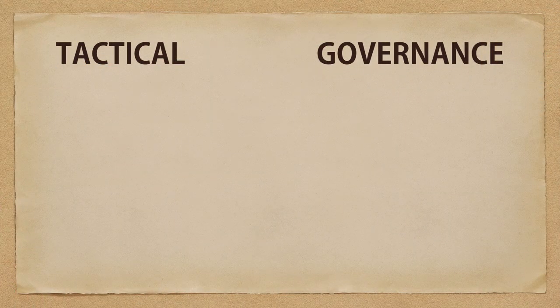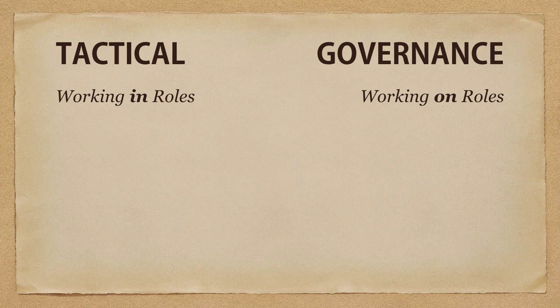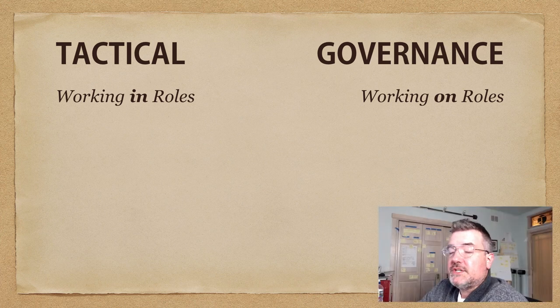Now let's talk about tactical and governance — what's different about them and what's the same. Tactical involves working in the organization, working in our roles, doing the work of the organization — what you think of as normal work at a normal company. When you're in a governance meeting, you're working on your roles: changing the structure of the roles, changing the structure of the company, deciding what are the best roles to have to achieve your purpose together. Tactical is working in the roles; governance is working on the roles.